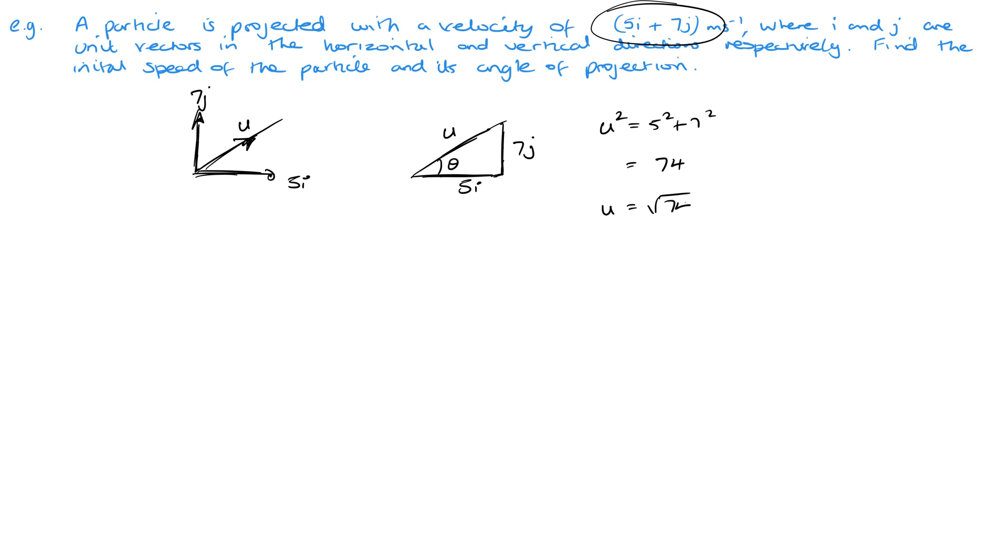You could write this as a decimal, but generally, unless the question says otherwise, leave it as its square root - it's just easier that way. Now we need to find the angle. That's going to be tan. We could use the value we've just worked out and use sine or cos, but it makes far more sense to use the values you're given. So tan theta will be opposite over adjacent, 7 over 5, and that should give us 54.5 degrees to three significant figures.